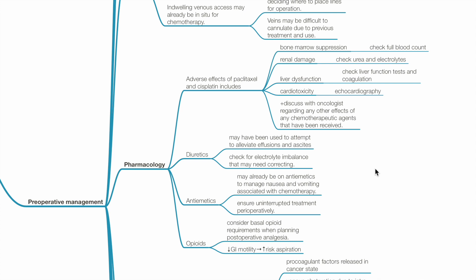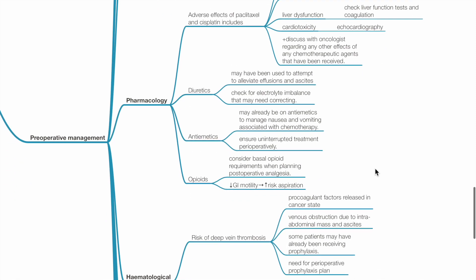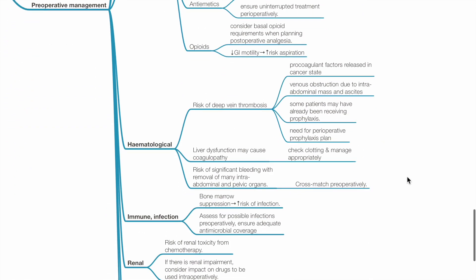The patient may already be on opioid therapy for pain control. Consider basal opioid requirements when planning post-op analgesia. Opioids reduce gastric motility and this increases risk of aspiration.